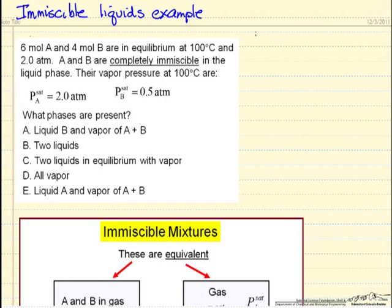In this example, we're going to look at the case where liquids are immiscible. So a system that has 6 moles of A and 4 moles of B in equilibrium at 2 atmospheres total pressure, and we're given vapor pressures. The question is what phases are present and we're given a bunch of choices.